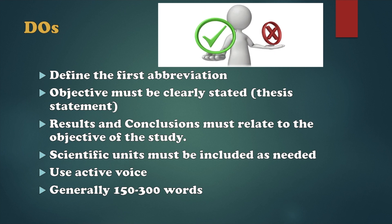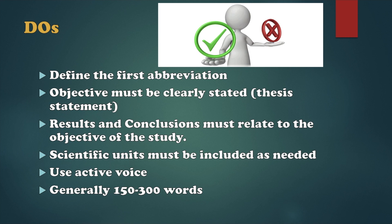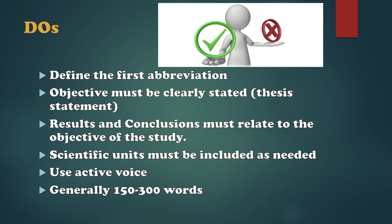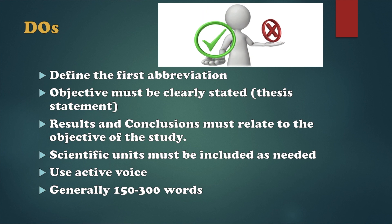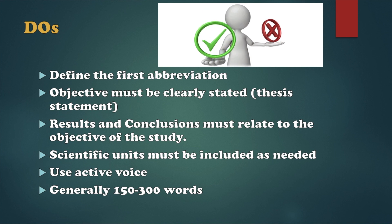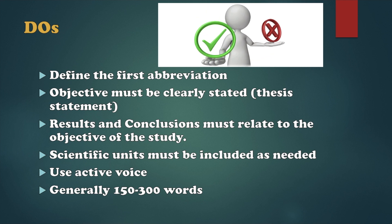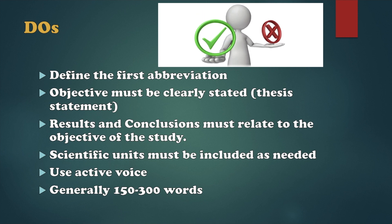The results and conclusions must relate to the objective of the study. Once we have the conclusions and results, we need to double-check whether we are answering and meeting our stated goal. Scientific units must be included as needed — when there are numbers and a need to provide units, we must include them. We use active voice rather than passive voice when writing our abstract.